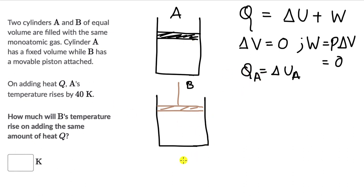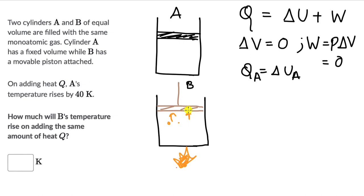For the second case, heat is being added to cylinder B, but this piston can move. The gas molecules will gain internal energy and start moving faster, colliding with the walls faster, leading to an increase in pressure. Those gas molecules will also collide with the piston, so the piston will move up, and the final position could look somewhat like this — the piston has moved up slightly.